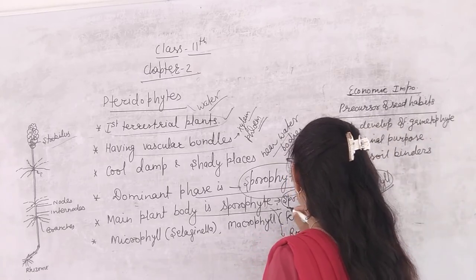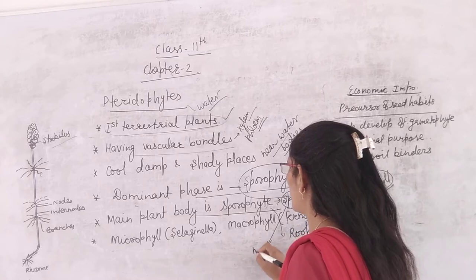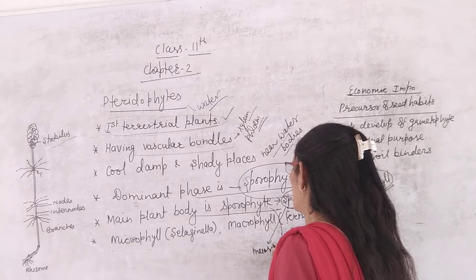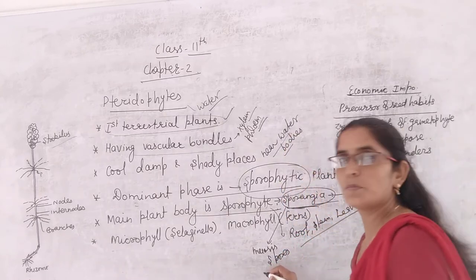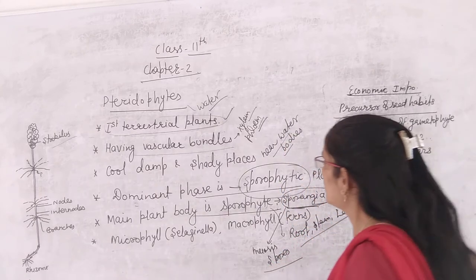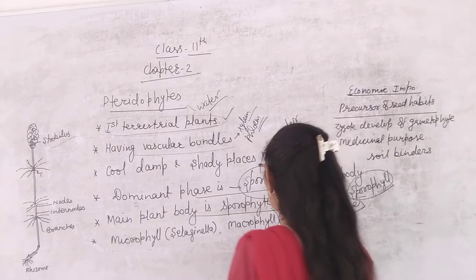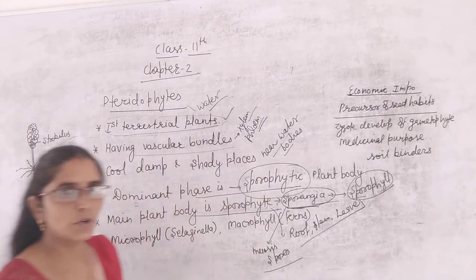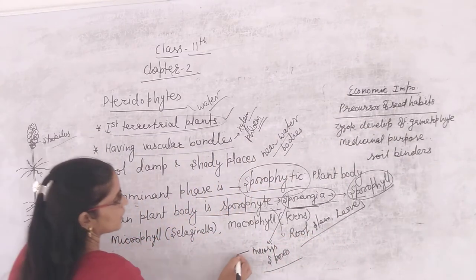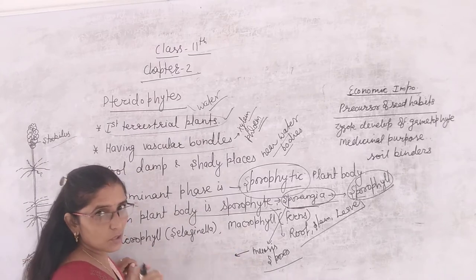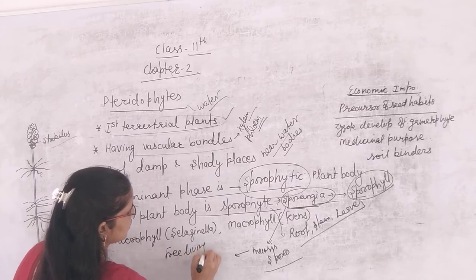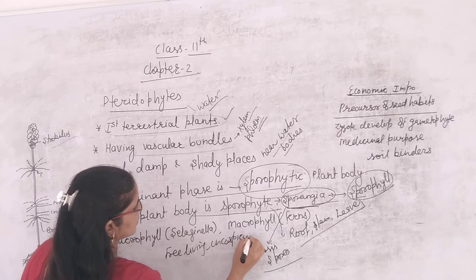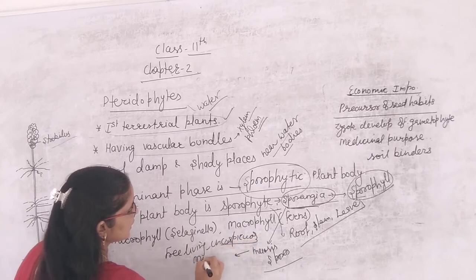Now the sporangia inside, the spores are produced through meiosis. What are the spores? Spores are haploid. They are inconspicuous, free-living, multicellular.